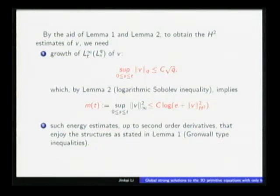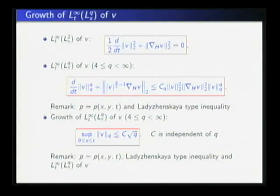By the aid of these two lemmas, to obtain the H2 estimate, we need to do the following two things. The first is to show the growth of L^Q of V grows no faster than square root of Q. And as a result, this L infinity here can be bounded by log of H2 of V. As I mentioned here, we need to do some L infinity estimate. This is the first thing. The next is to do such inequalities up to second order derivatives, which enjoy the structure as in the Gronwall-type inequality. So let's do these two things as follows.